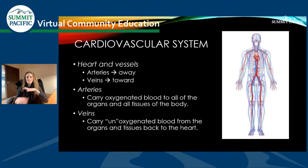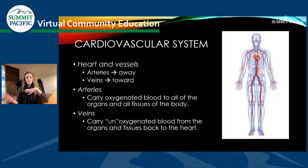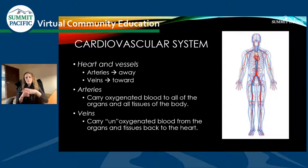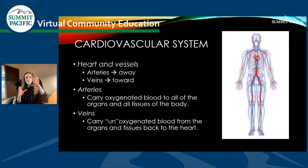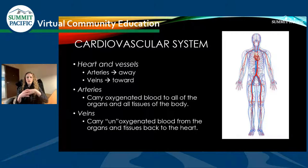To start, a general review of what is the cardiovascular system. It's comprised of both the heart and its vessels. There are two different major vessels: the arteries, which move blood away from the heart, and the veins, which bring blood back to the heart. The arteries carry oxygenated blood to all of our organs and tissues, and the veins carry that deoxygenated blood back to the heart so that it can be oxygenated by the lungs.